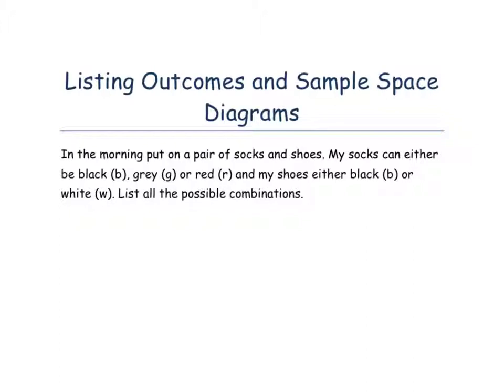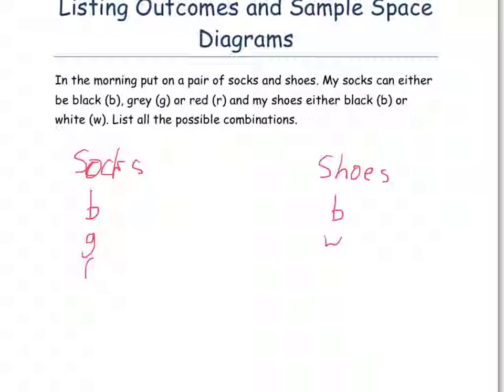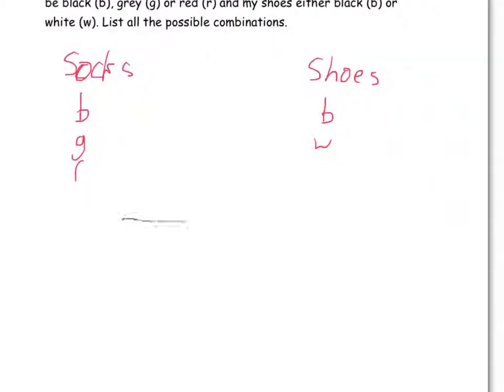The two things we've got are a pair of socks and a pair of shoes. My socks can either be black, grey, or red, and my shoes can either be black or white. We want to write down all the possible ways to combine socks with shoes. How I do this and how it will be set out in the exam is you'll have socks and you'll have shoes.